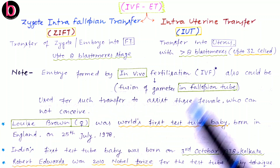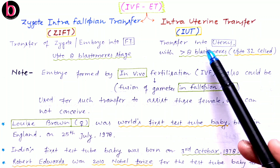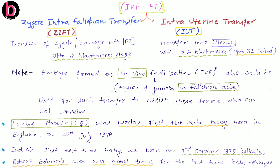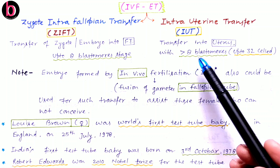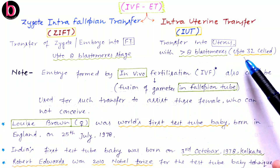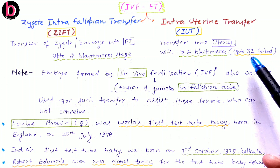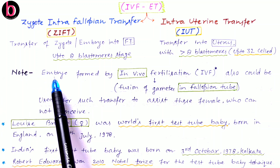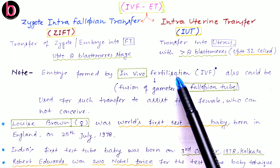In Intrauterine Transfer (IUT), there is transfer of the embryo inside the uterus. Here, we must use an embryo carrying more than eight blastomeres, up to a maximum of the 32-cell stage, because at this stage the embryo is suitable for implantation.